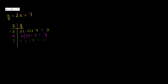Let me do one more just to show you this really is a line. Let's do x is equal to 8, just to pick a random number. Then y is going to be 2 times 8 plus 7. This might go off our graph paper, but 2 times 8 is 16, plus 7 equals 23.